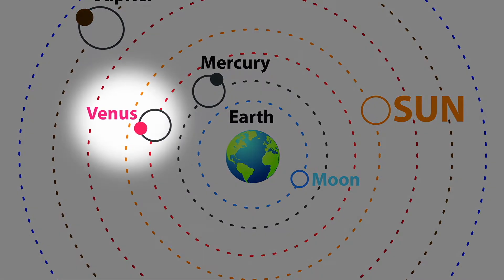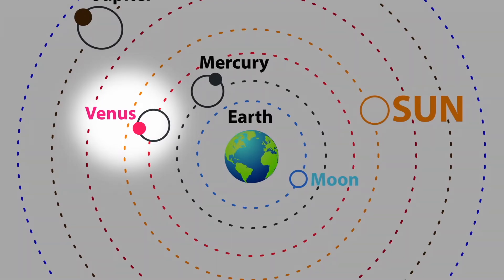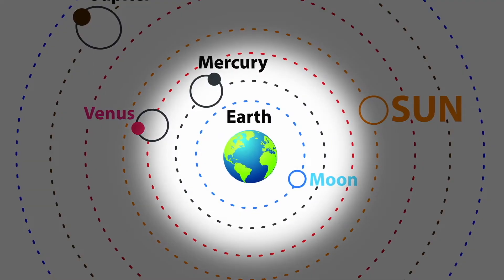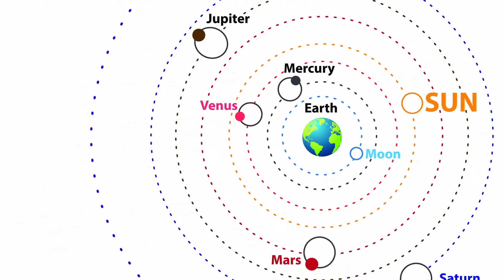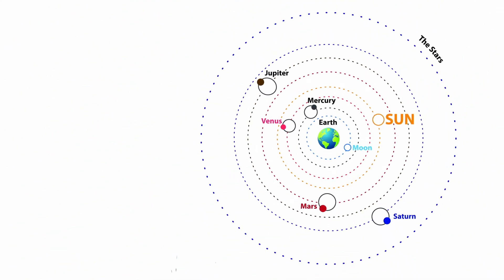Ptolemy believed that planets moved in small circles, and they all moved in bigger circles around Earth. Well, it's a lot of circles. Since astronomers followed Ptolemy's model for such a long time, we can jump ahead to the year 1508 CE.